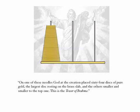At the start of creation, God supposedly placed 64 discs of pure gold on the slab, on one of the needles stacked from largest at the bottom to smallest at the top. This is the Tower of Brahma.